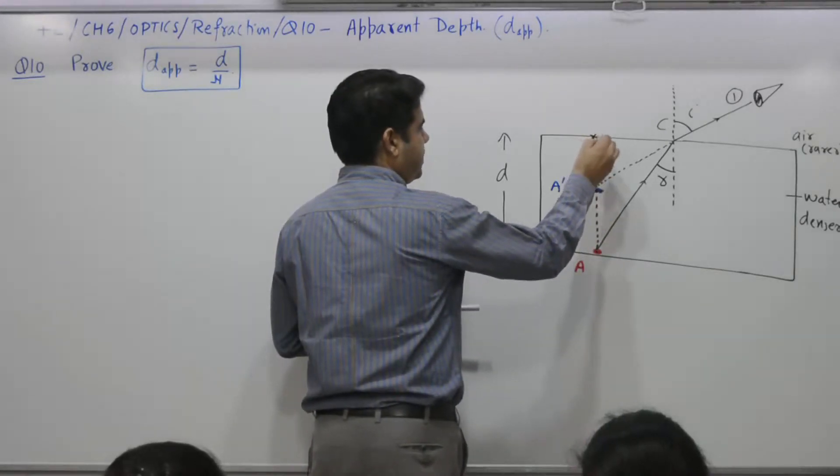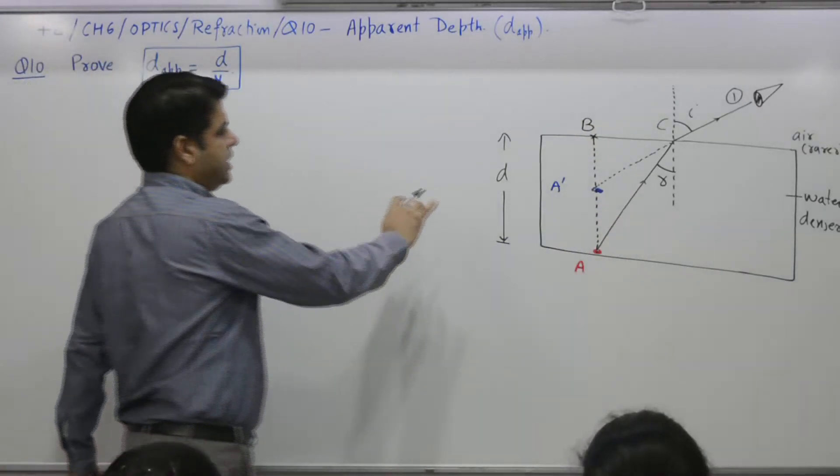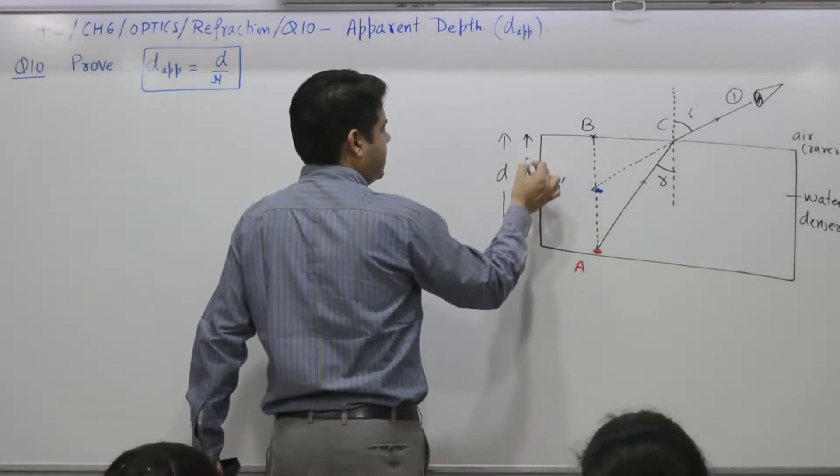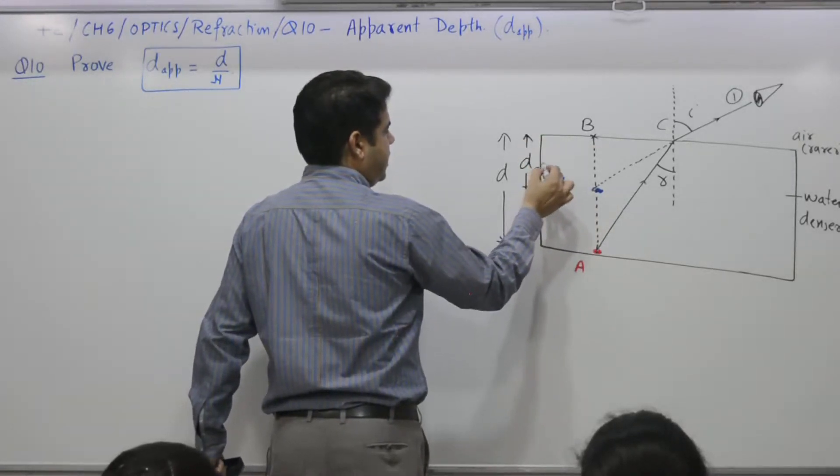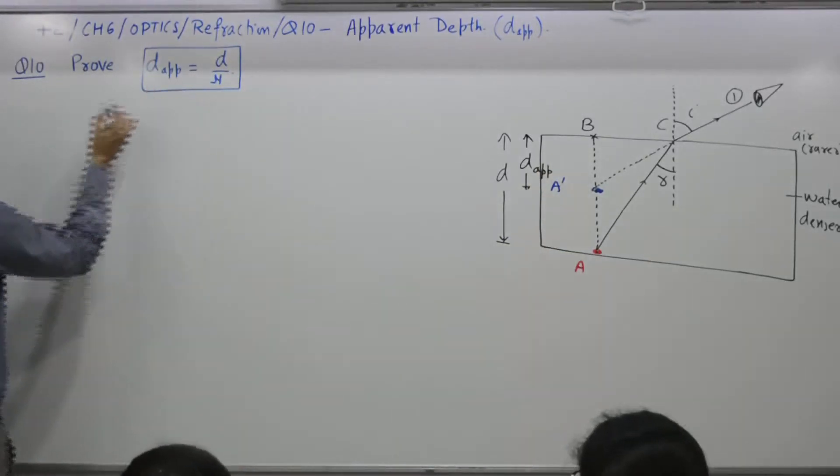Let this point be termed as B. What is given is D. A dash is at what depth? D apparent. Purpose is to find D apparent.